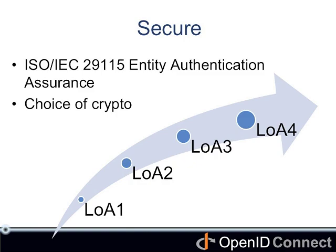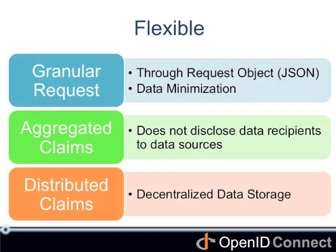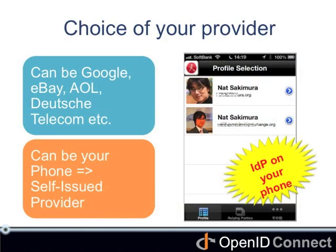It's also very flexible. You can make granular requests through a JSON-based request object, which makes data minimization easy. To return the claims, you have the choice of aggregated and distributed claims with different privacy characteristics. OpenID Connect not only supports large identity providers, but you can actually have your own identity provider — for example, a dedicated identity provider on your phone.